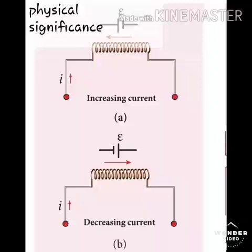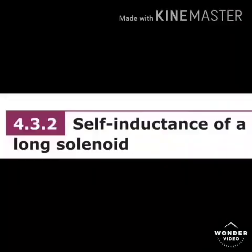In the above two circuits, the inductance of the coil opposes any change in current and tries to maintain the original state. The next topic is self-inductance of a long solenoid.